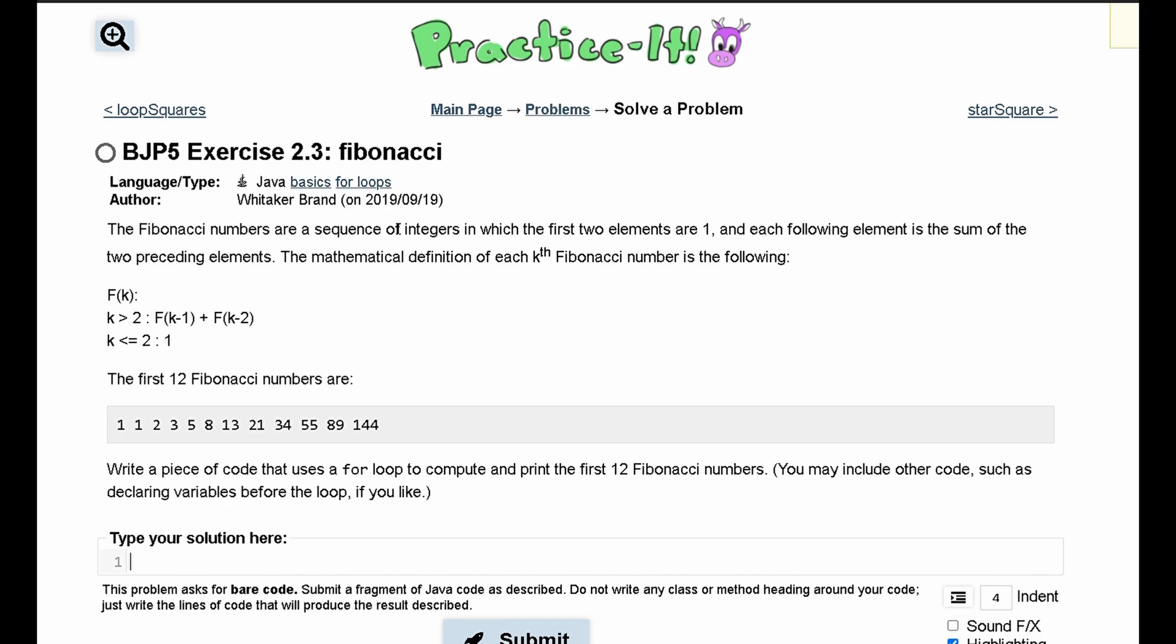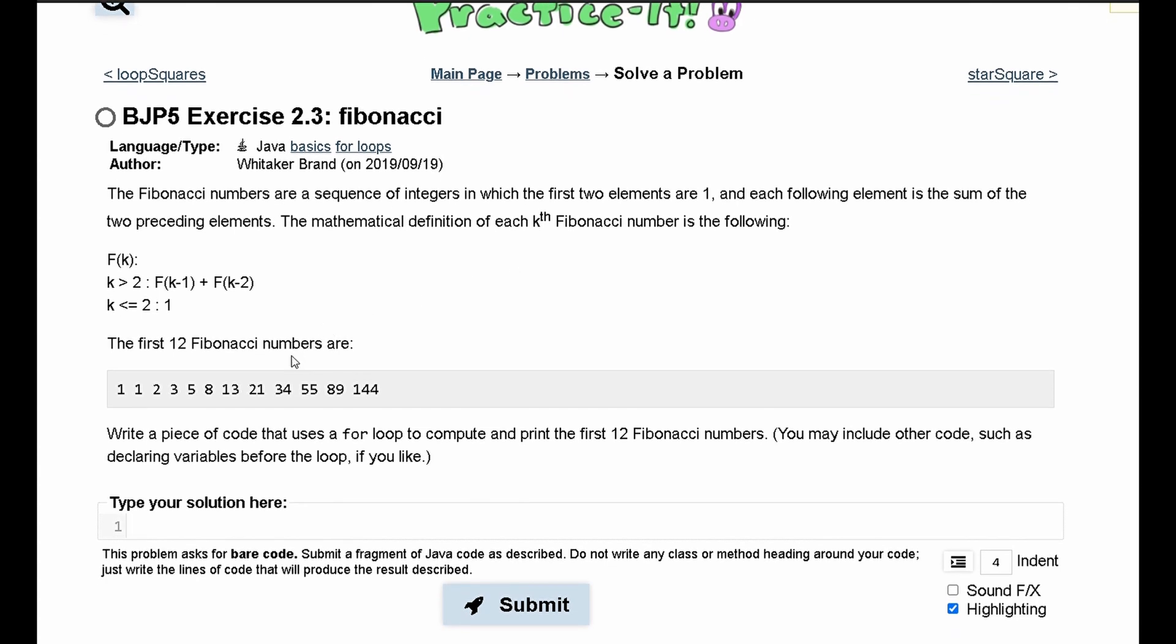For practice exercise 2.3 Fibonacci, we are told that the Fibonacci numbers are a sequence of numbers in which the first two elements are one. We are given the first 12 Fibonacci numbers here and we need to write a piece of code that uses a for loop to compute and print the first 12 Fibonacci numbers.